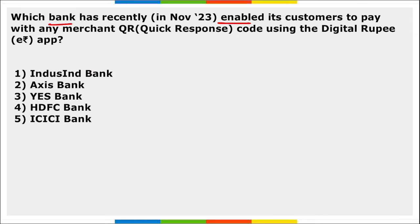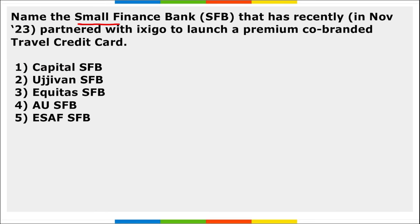Next: which bank has recently enabled its customers to pay with any merchant QR code using the digital rupee application? It is ICICI Bank. ICICI Bank has enabled customers to pay with any QR code using the digital rupee, also known as e-Rupee. This provides flexibility and convenience, expanding payment options and encouraging digital rupee usage.